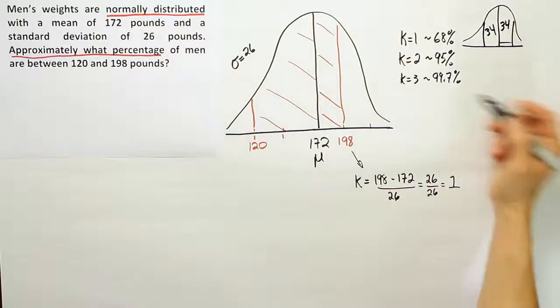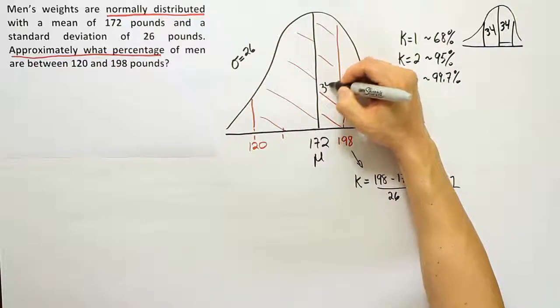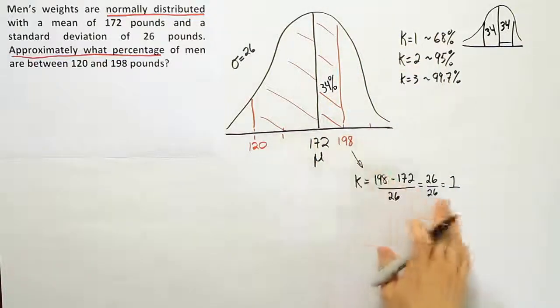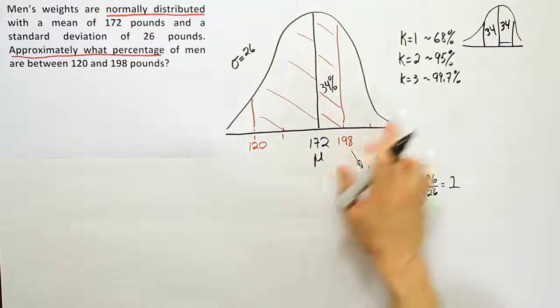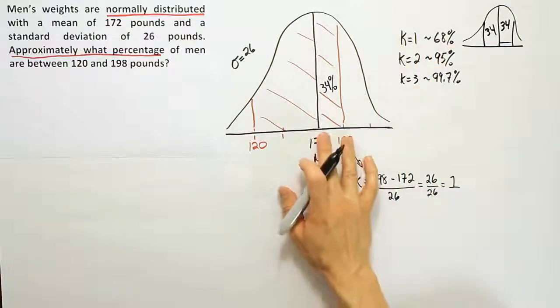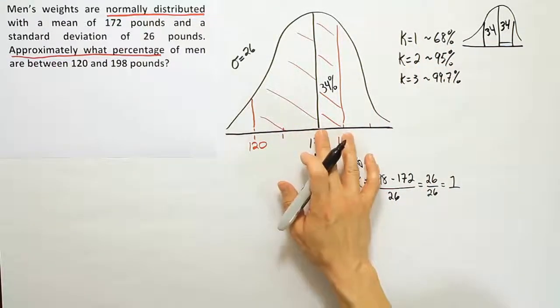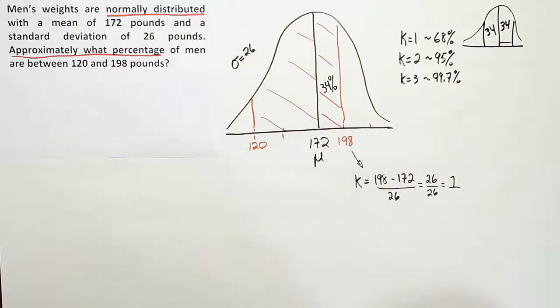I can answer this part already. I know that this little part is 34 percent because it's one standard deviation above the mean. That corresponds to 68 if you go one above, one below; half of it is 34. Now I know that's 34, excellent. Now we're going to get the other side.